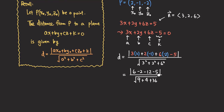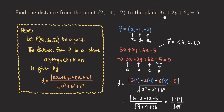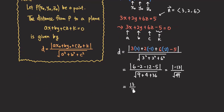Continuing the calculation: six minus two is four, four minus twelve is negative eight, negative eight minus five is negative thirteen. So we have the absolute value of negative thirteen in the numerator. In the denominator nine plus four plus 36 is 49, and the square root of 49 is seven. Taking the absolute value gives positive thirteen, so the distance between the point and the plane is thirteen over seven.